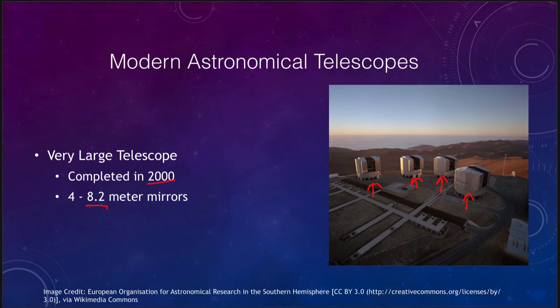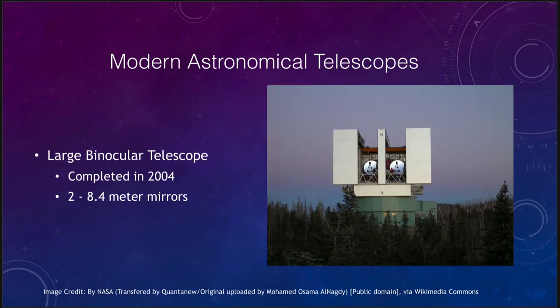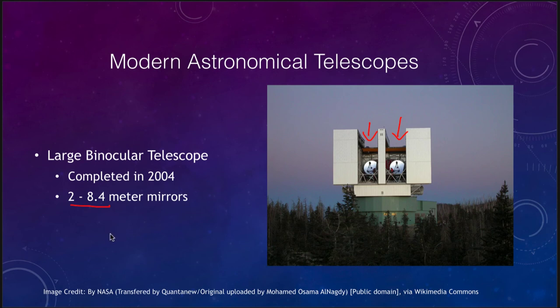Since fainter objects we can see depend on the size of the telescope, the Very Large Telescope can see fainter objects than the Hale. We also have the Large Binocular Telescope, completed in 2004, which has two 8.4-meter mirrors. It gets its name because it acts almost like a pair of binoculars — two telescopes staring out at space. Working together, the two 8.4-meter mirrors give it even a little more capability than the Very Large Telescope.